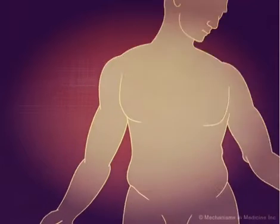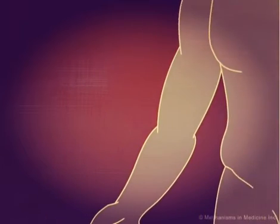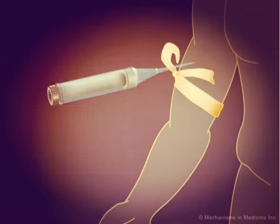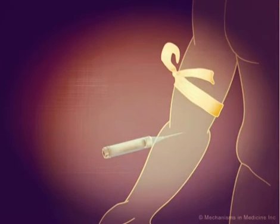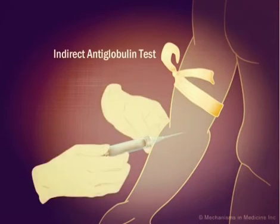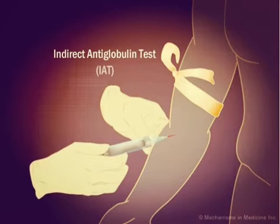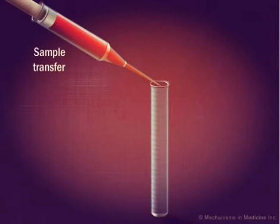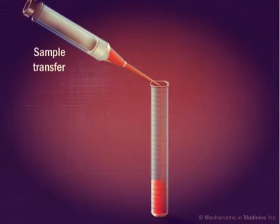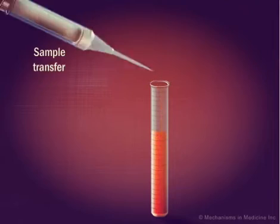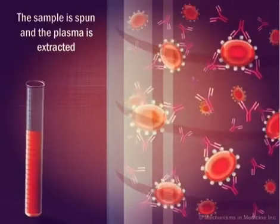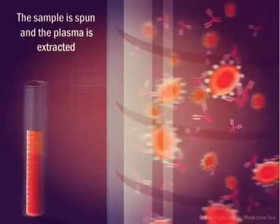To detect whether human anti-red blood cell antibodies are present in the plasma of a patient, an indirect antiglobulin test, or IAT, is used. Unlike the DAT, which relies on the red blood cells in the sample, the IAT only deals with the extracted plasma.